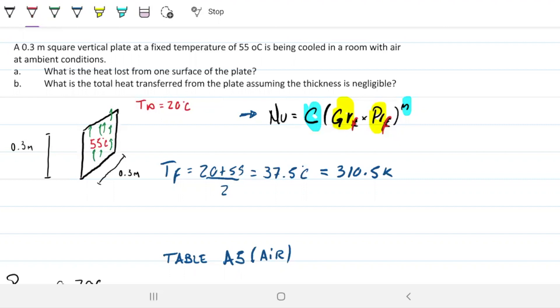What is our film temperature? Well, between 55 and 20, that's going to be 37.5, which is 310 Kelvin. So I'm going to jump into table A5 and grab properties for air at 310.5.